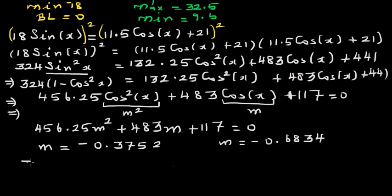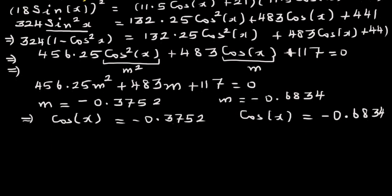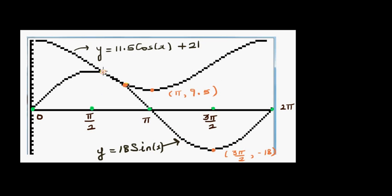So this means cos x = −0.3752 or cos x = −0.6834. You will get four solutions in total, but we are going to accept only the solutions between 0 and pi. Going back to the graph, we are interested in the two intersection points that are both less than pi, or 3.14. We'll solve and accept only values less than pi.